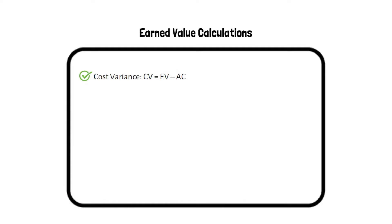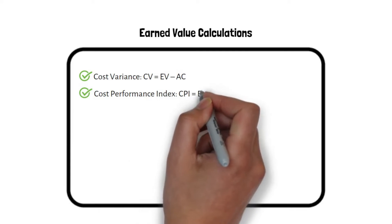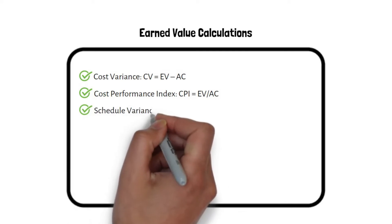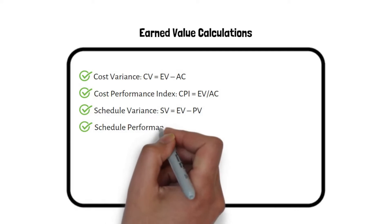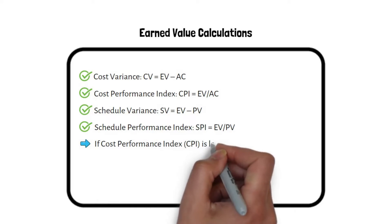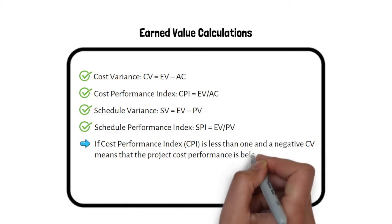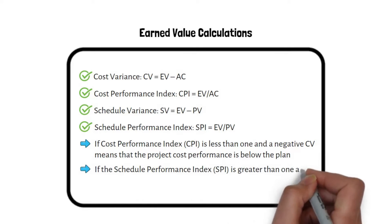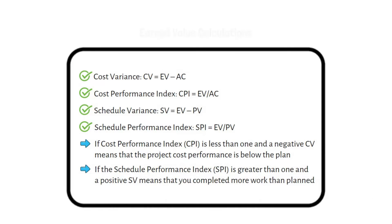Earned Value calculation formulas: Cost Variance (CV) equals EV minus AC. Cost Performance Index (CPI) equals EV divided by AC. If the Cost Performance Index is less than one and CV is negative, the project cost performance is below plan. If the Schedule Performance Index is greater than one and Schedule Variance is positive, it means you completed more work than planned.